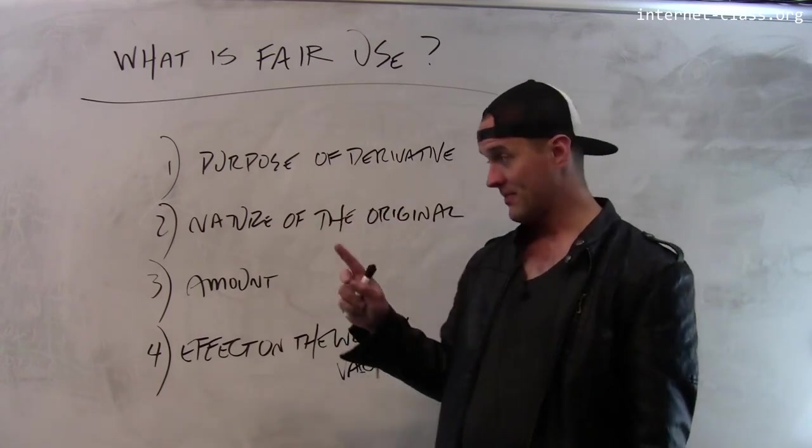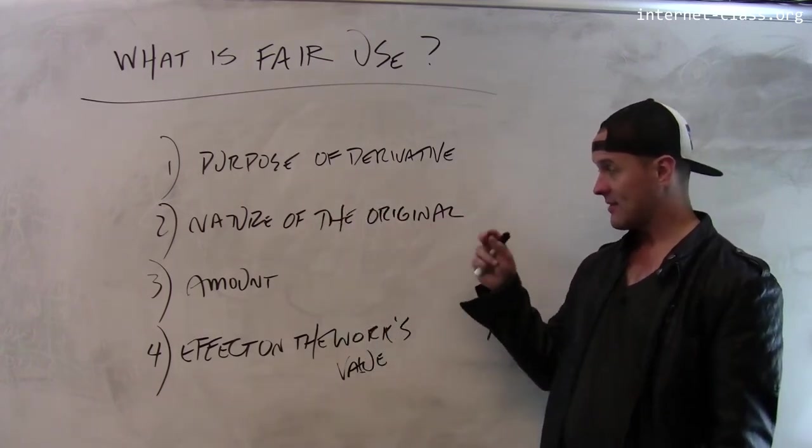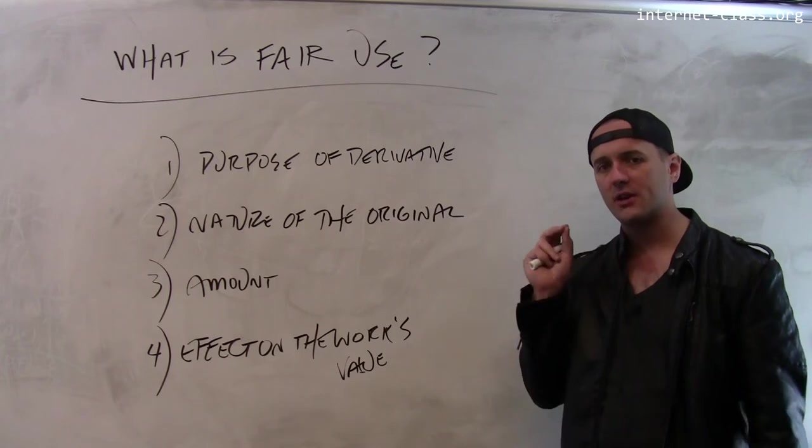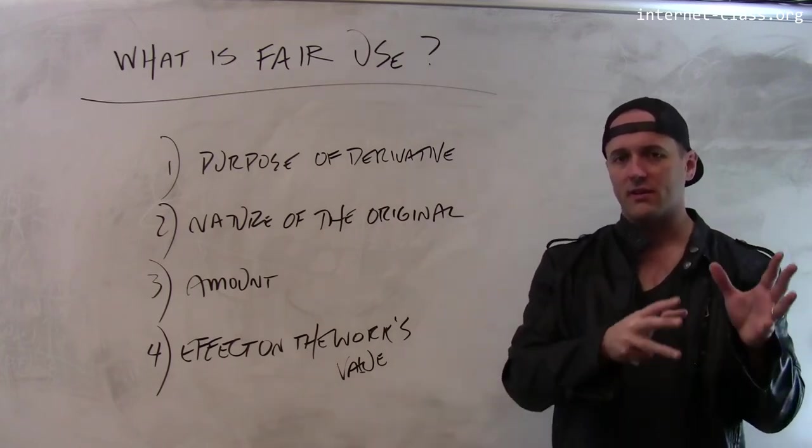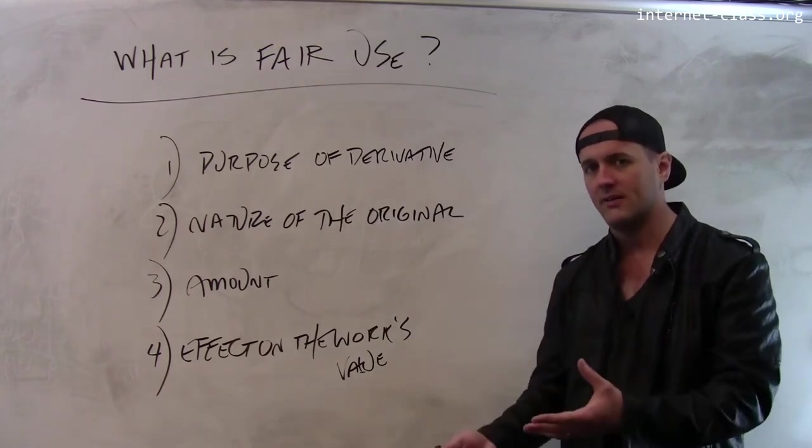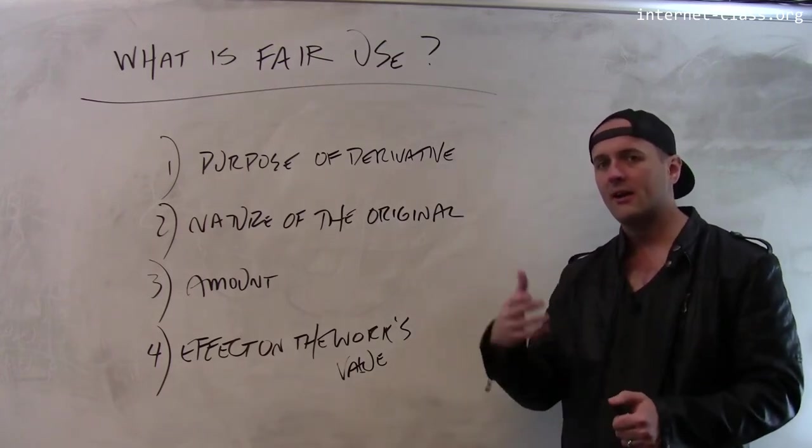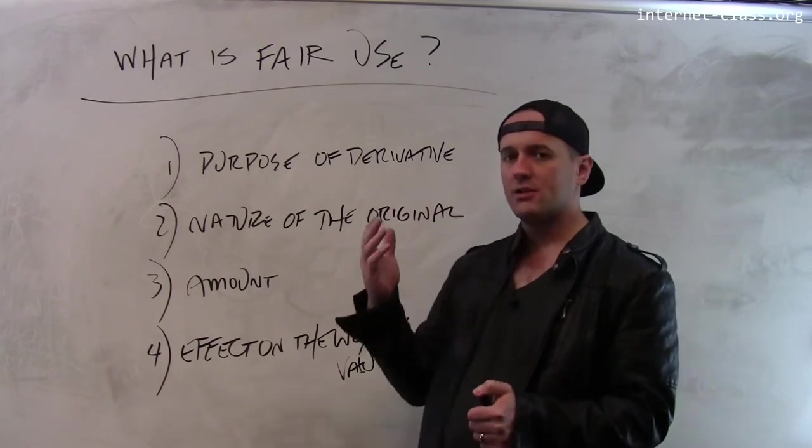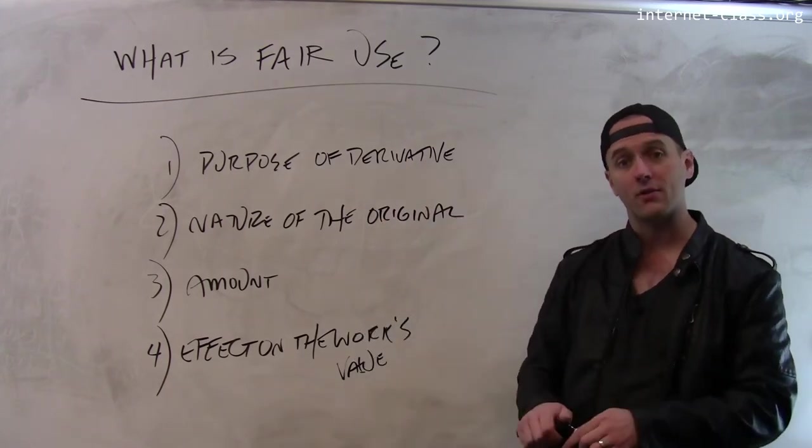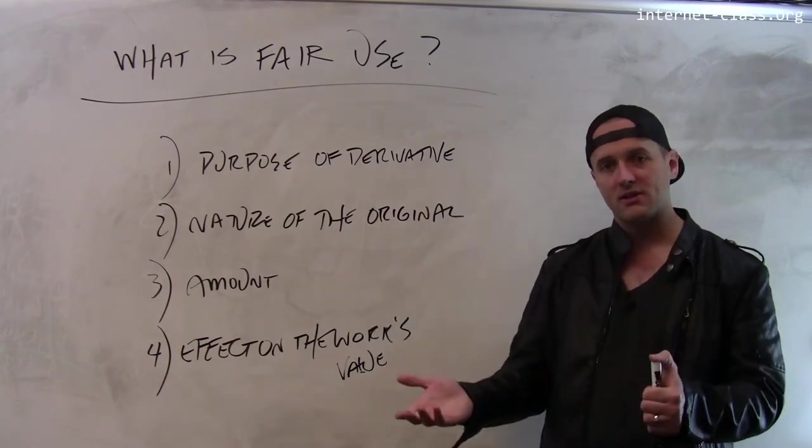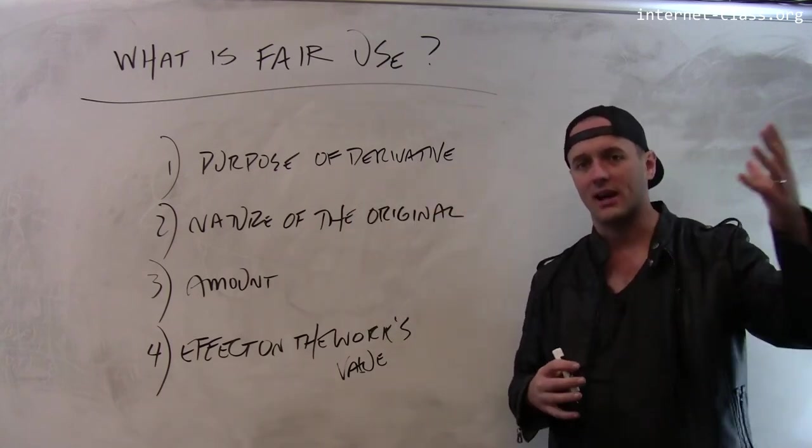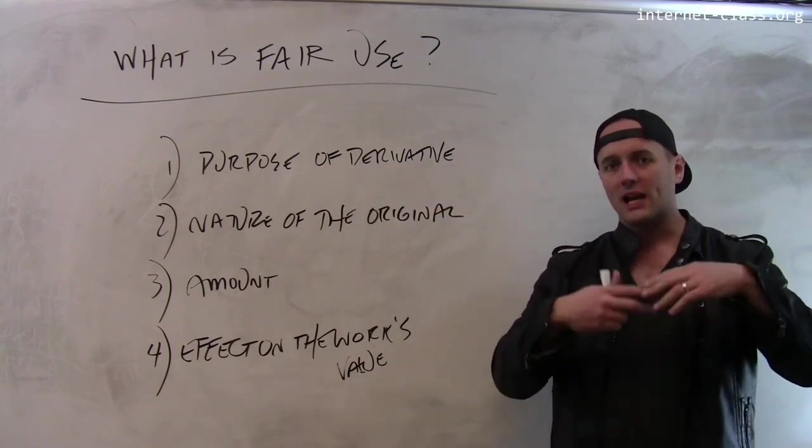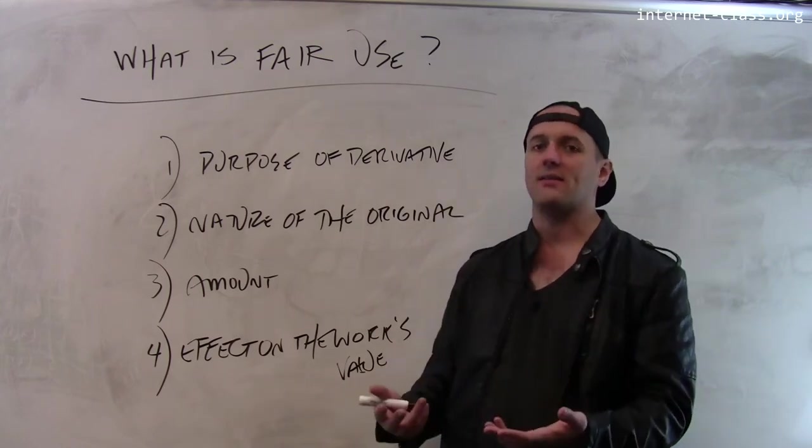The second guideline is the nature of the original work. Courts have cast slightly different views on fictional versus non-fictional work. For example, non-fictional work claiming to tell truths about how the world works opens itself up to different types of criticism. You may disagree with it, have facts that contradict it, and can quote parts of it to make a case that it's not true.